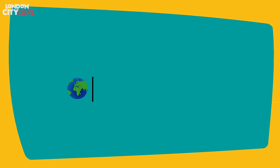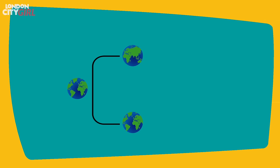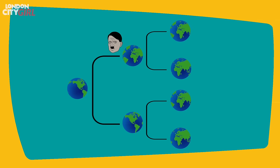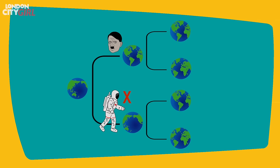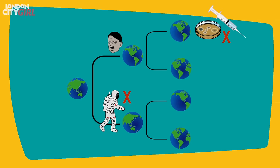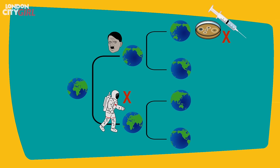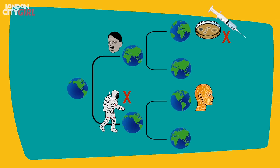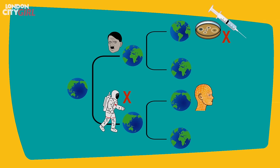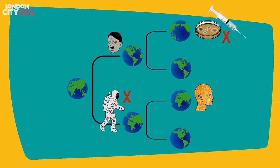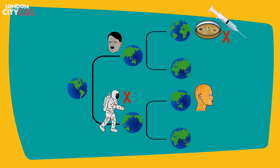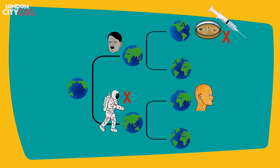Every time there is one or more possible option available for the universe, the universe splits and creates copies where all possible outcomes come true. So for example there could be a world where Hitler won World War 2, a world where mankind never made it to the moon, and a world where penicillin was never discovered. But there could theoretically also be worlds that are much more advanced than us — a world where we have glimpsed further into the workings of the universe and achieved immortality. If that were the case, then every person has achieved quantum immortality in one alternate reality or another.